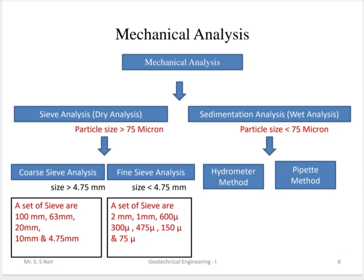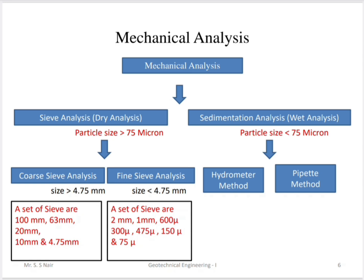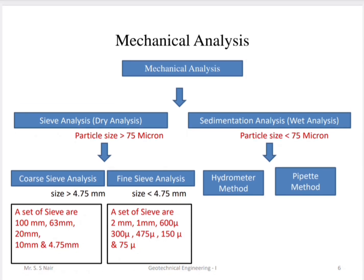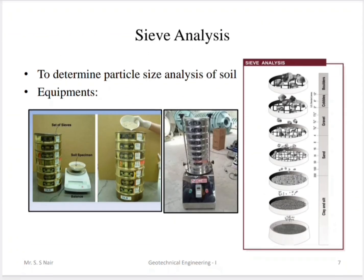Using mechanical analysis, we can determine the size of various particles, whether coarser or finer. Sieve analysis is a dry analysis process for particle sizes greater than 75 microns — coarser sieve analysis for 4.75 mm and greater, and finer sieve analysis for less than 4.75 mm. Sedimentation analysis is a wet analysis process for particle sizes less than 75 microns, identified by the hydrometer or pipette method.